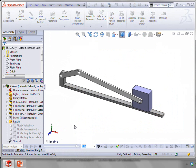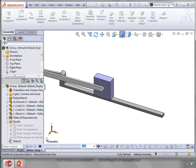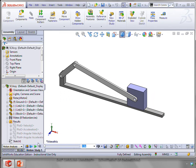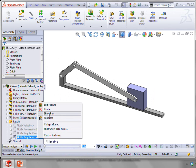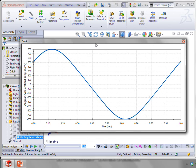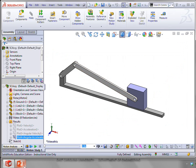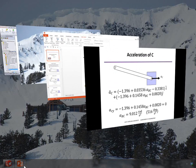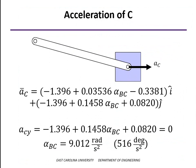We have the slider crank simulated to run at 60 RPMs, and we've plotted for one revolution. Here's the angular acceleration of the connector. And you can see the number here, a little over 500 degrees per second squared in the positive direction. So our 516 degrees per second squared is confirmed.